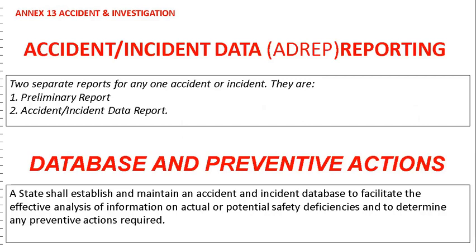Accident and incident data reporting: two separate reports are required for any one accident or incident — number one, a preliminary report, and number two, an accident or incident data report. A state shall establish and maintain an accident and incident database to facilitate the effective analysis of information on actual or potential safety deficiencies and to determine any preventive actions required.